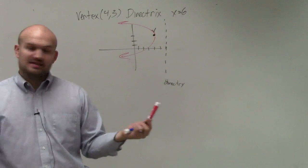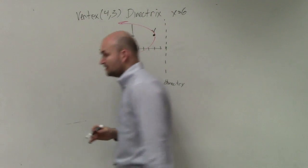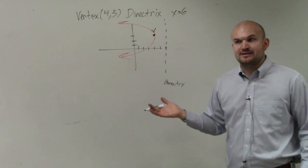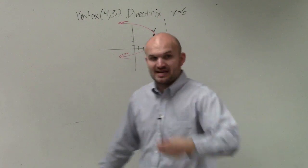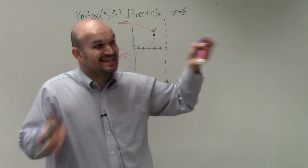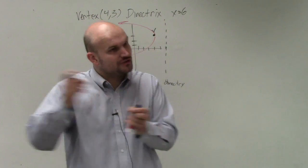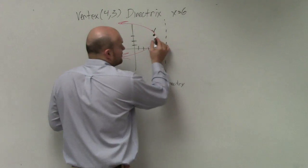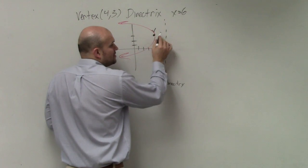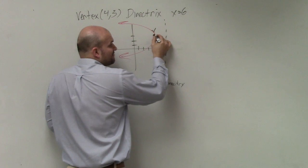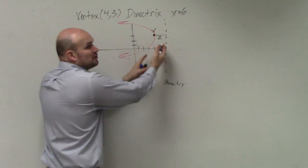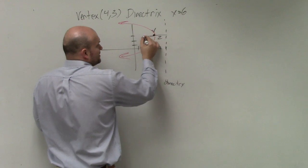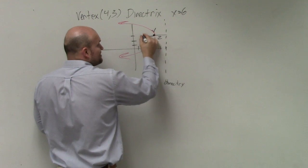Now, to find the focus, we know the vertex is there. But to be able to write the equation, we need to find p. So remember, p is the distance from the vertex to the focus. However, that same distance is equidistant from the vertex to the directrix. So the distance from the vertex to the directrix is positive 2, that means the distance from the vertex to the focus is going to be negative 2. So there's my new focus.